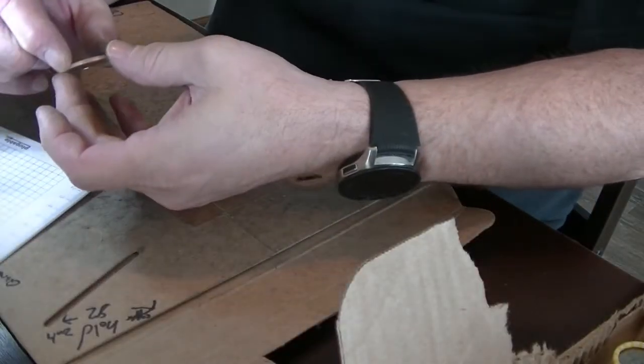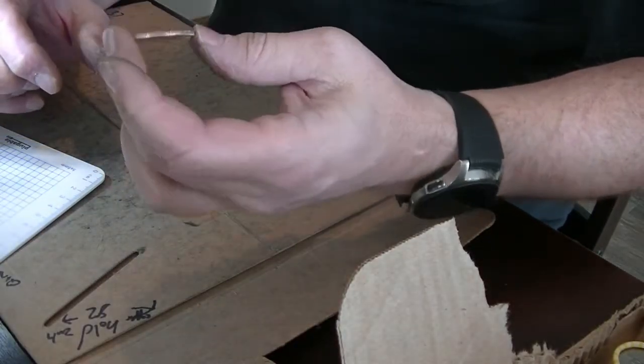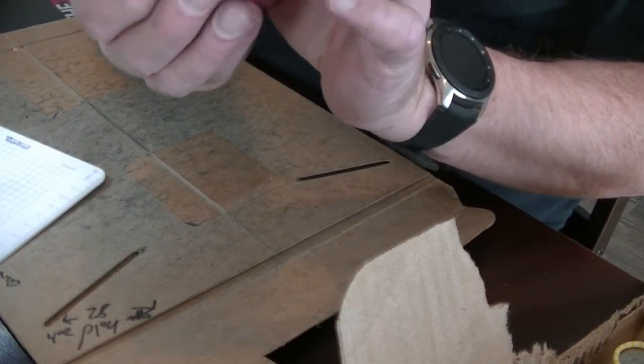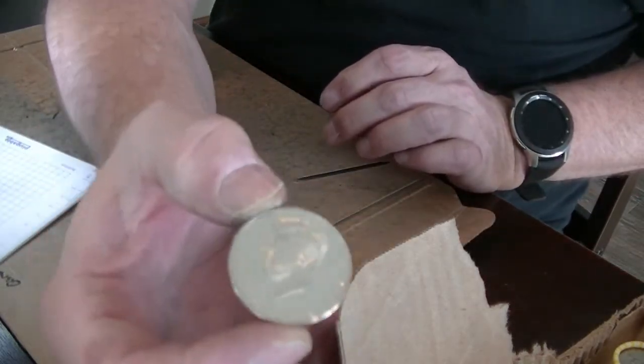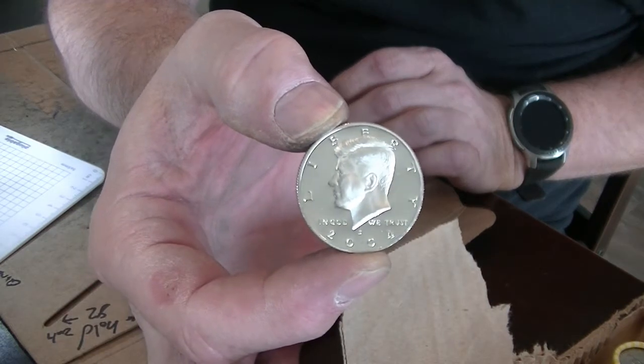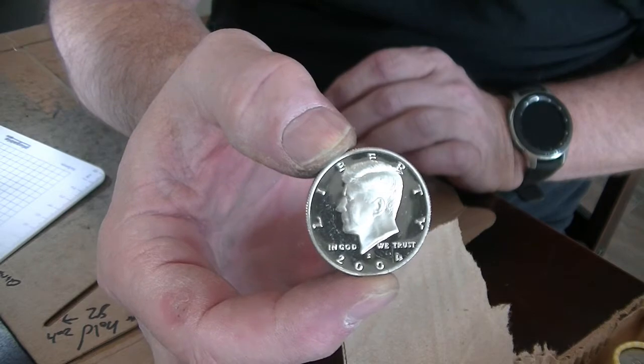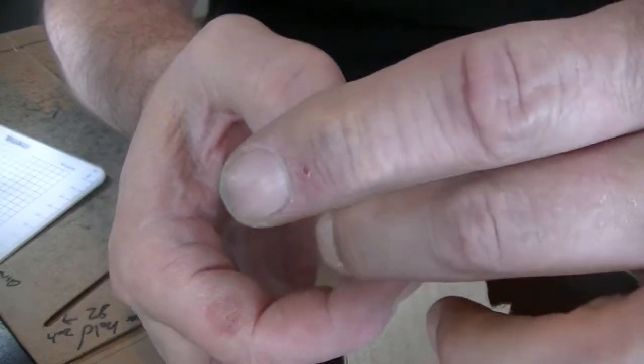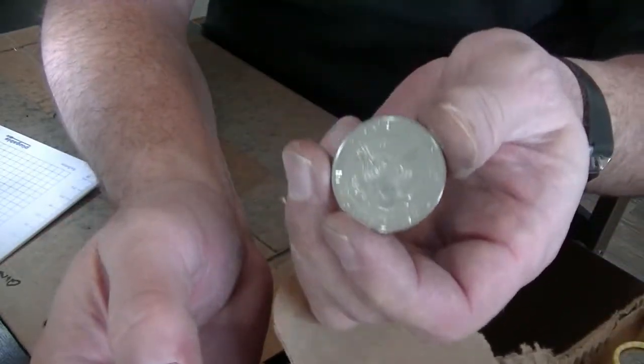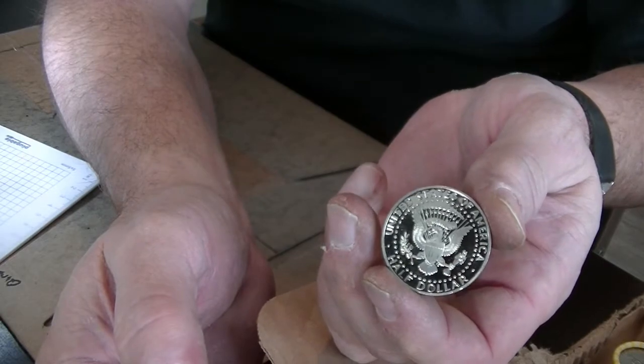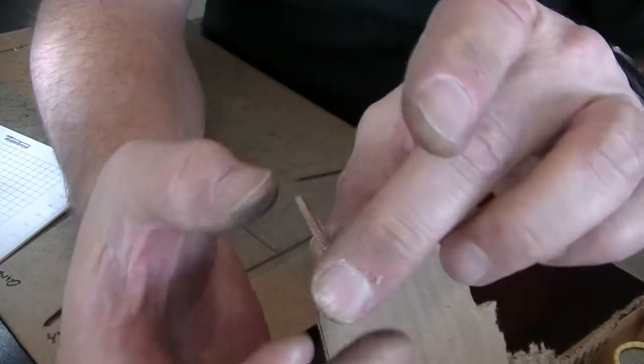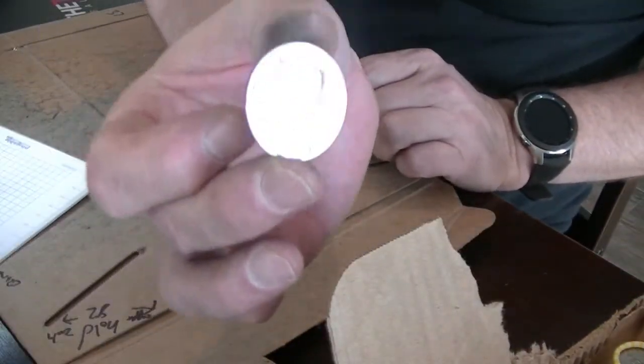Alright. We just pulled this one out. Not only is this an NIFC, but you'll see the condition this is in. Hopefully you can pick that up there. That is a 2004 proof half dollar. Look at that baby shine. That is beautiful. That is an awesome find going into the collection.